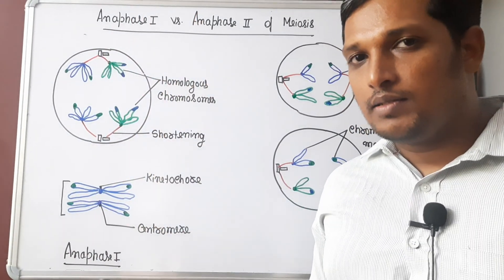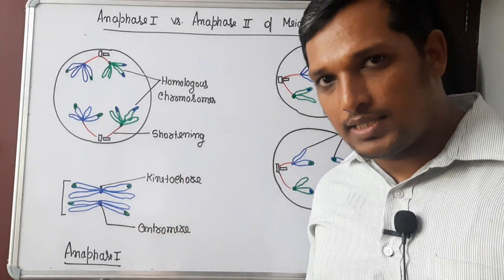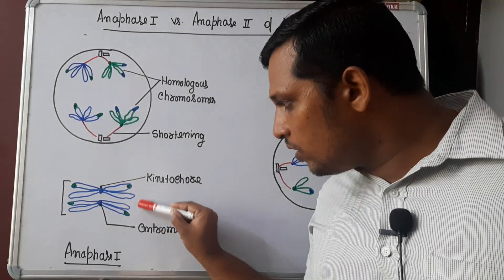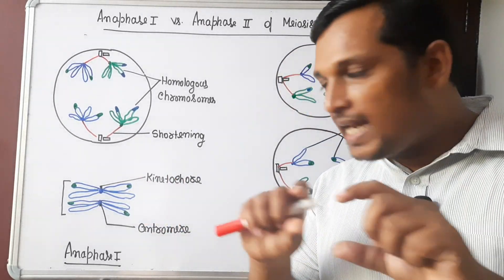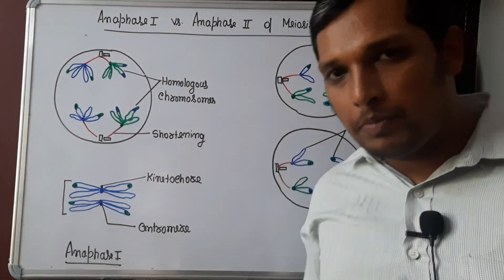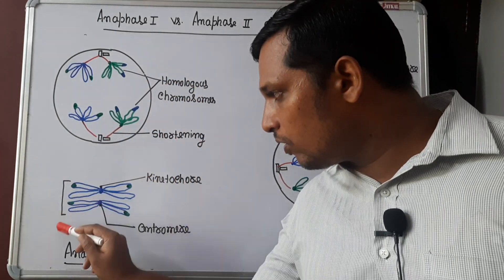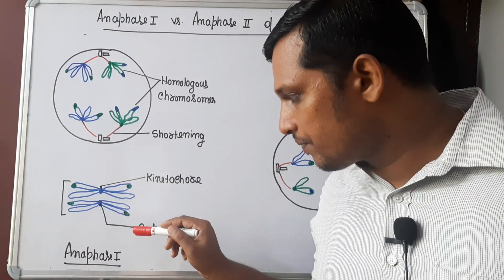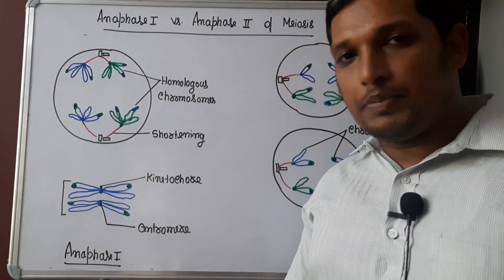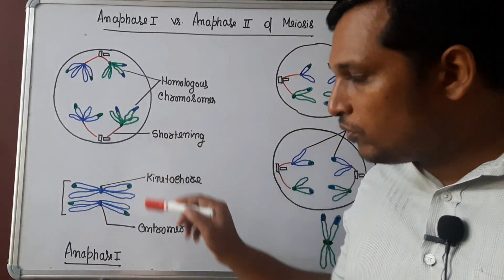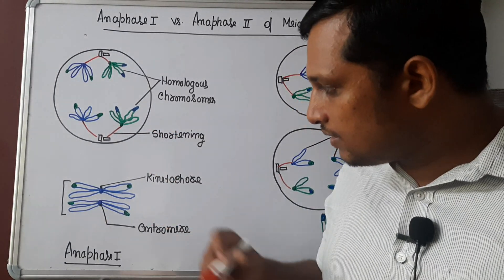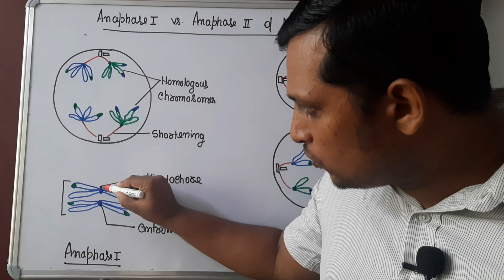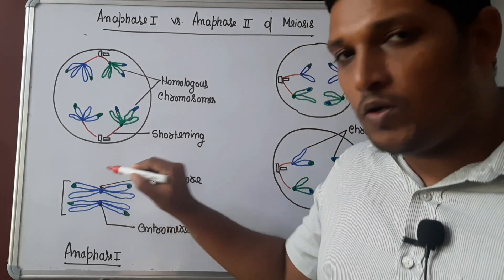In meiosis 1 at the metaphase stage, homologous chromosomes will be aligned at the equatorial plate. I have shown one homologous pair, one homologous chromosome containing two chromosomes. Now what happens during metaphase stage, listen carefully: to the kinetochore of the chromosome, to one chromosome, only one spindle fiber attaches.